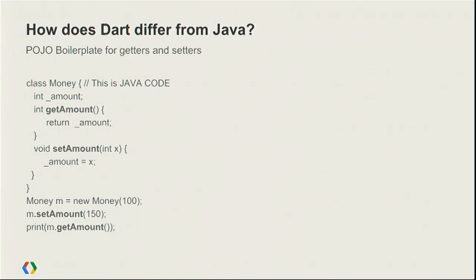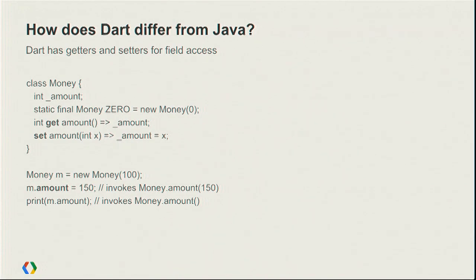Dart has getters and setters. In a typical Java POJO, you'd write an 'int getAmount()' method and a setter for it. In Dart, you put the 'get' keyword in front of the function name and a 'set' keyword in front of the setter. Then you can reference the object as if those were field references, not method calls, and Dart will invoke the getter and setter methods for you. This is a less boilerplate-heavy way of setting up properties.